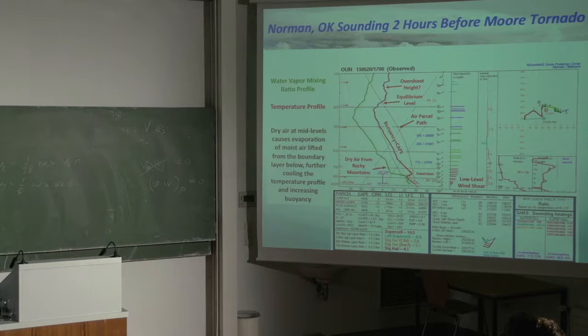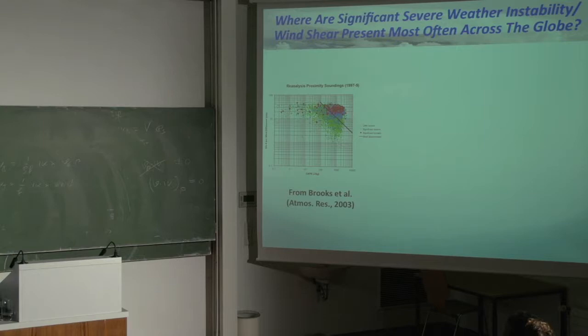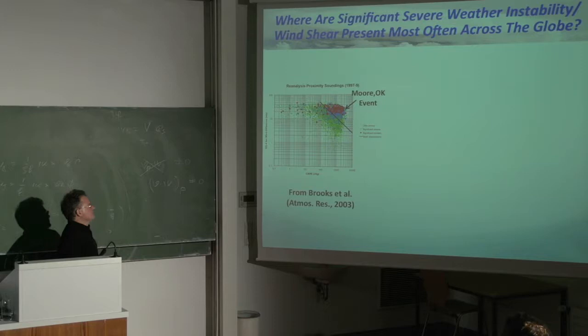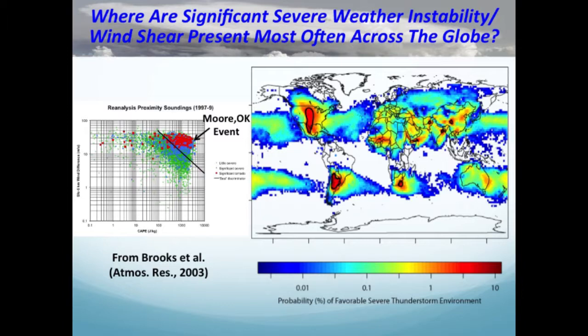Where are significant severe weather, instability, and wind shear most often present globally? The Moore Oklahoma tornado event was way out on the tail of the severe weather distribution. The United States has a huge severe weather risk, as do parts of Argentina, South Africa, southern Europe, and downstream of mountain ranges in parts of the Far East. When we develop satellite parameters describing severe weather, we should see patterns very similar to this global distribution in our datasets.